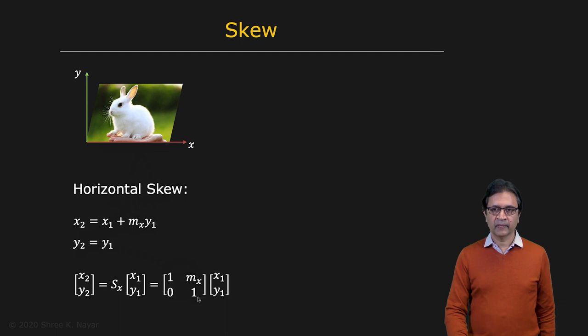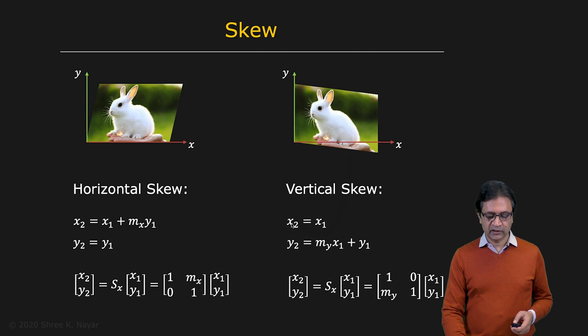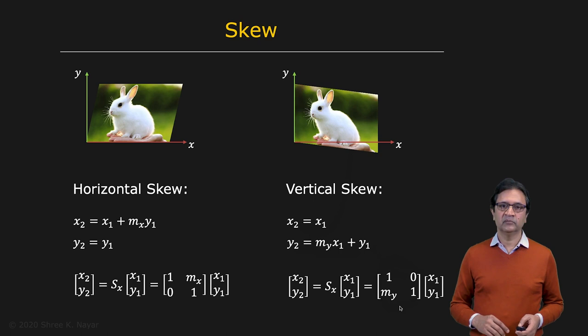Simple. And if you wanted to apply the skew in the vertical direction, you have X2 equal to X1 and Y2 equal to M, Y, X1. And Y is a constant again, plus Y1. And that's the matrix that allows you to perform that particular transformation.